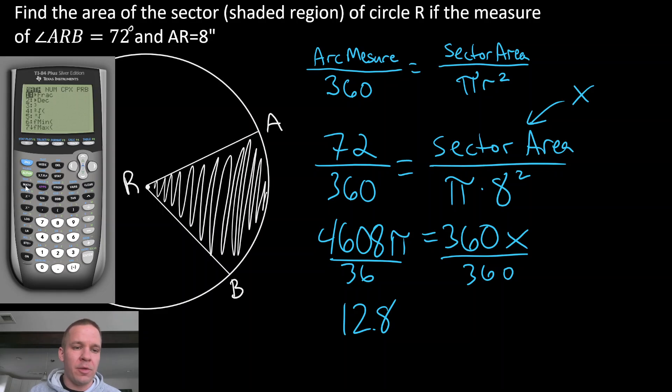So how can I get this into a fraction form rather than decimal? If I hit that math button right below the green alpha, my first option there is frac, and if I hit enter, you're gonna see answer arrow frac. If I hit enter one more time, it'll turn it into a fraction, which is 64 over five.